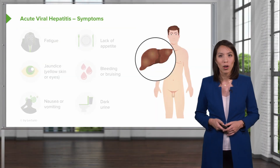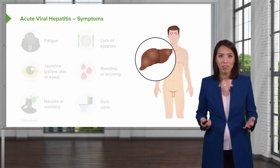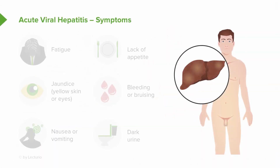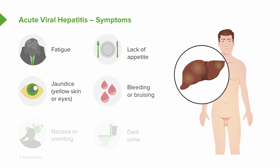All types of viral hepatitis present similarly. Patients may come in with fatigue, a general lack of appetite, they may develop jaundice, bleeding or bruising, nausea or vomiting, and they may have dark urine.